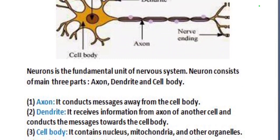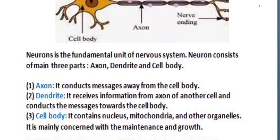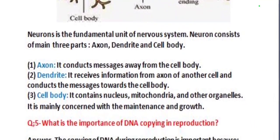The dendrite receives information from the axon of another cell and conducts the messages towards the cell body. The cell body contains the nucleus, mitochondria, and other organelles, and is mainly concerned with the maintenance and growth of the neuron.